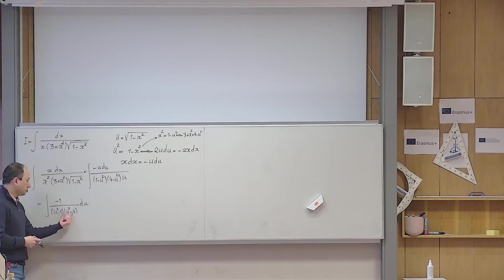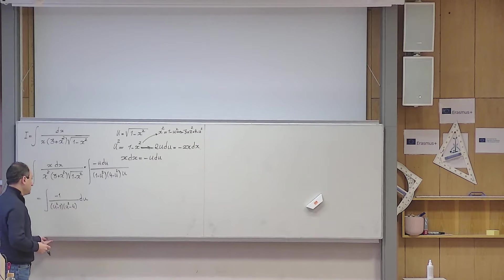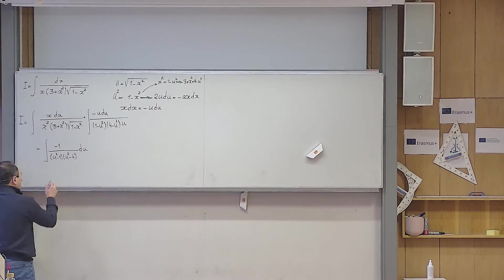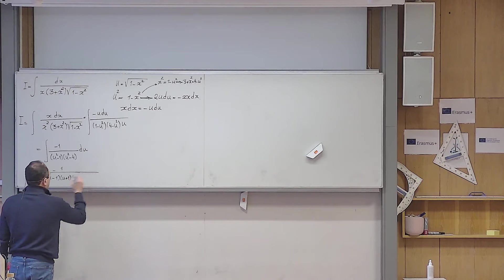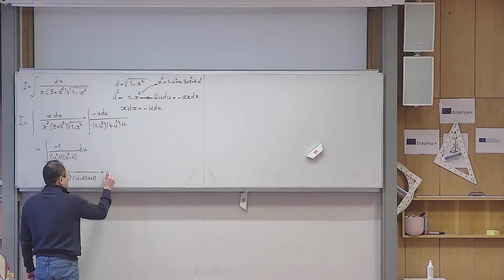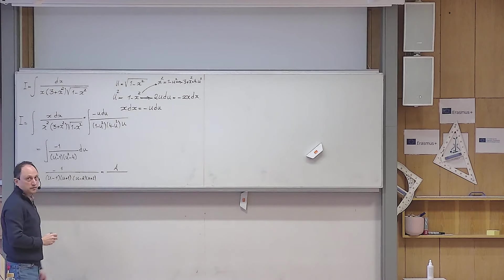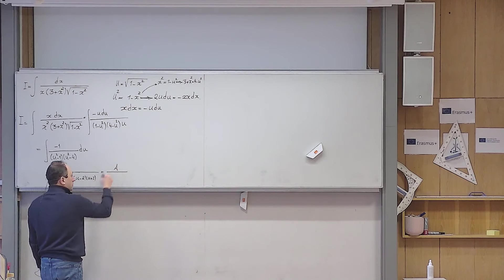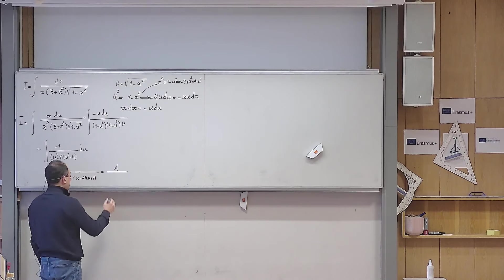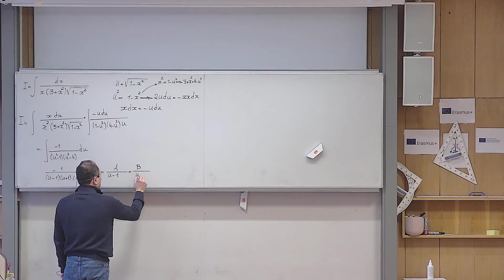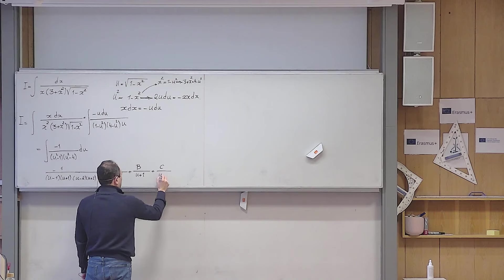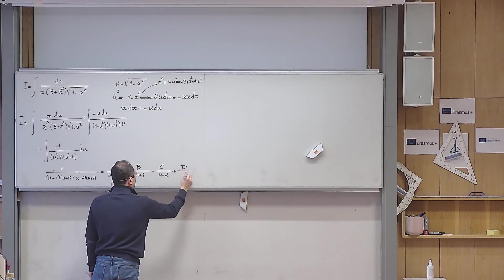For partial fractions I first factorize both terms: u squared minus 1 equals (u minus 1)(u plus 1), and u squared minus 4 equals (u minus 2)(u plus 2). Since each factor is a first-degree polynomial, I decompose into four partial fractions: a over (u minus 1) plus b over (u plus 1) plus c over (u minus 2) plus d over (u plus 2).